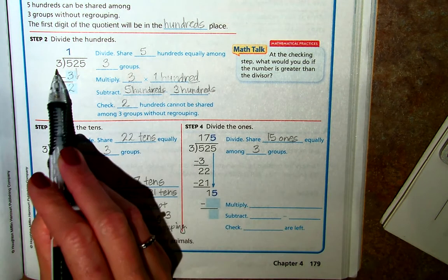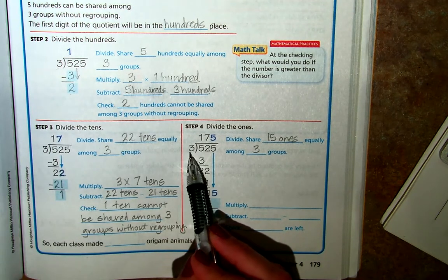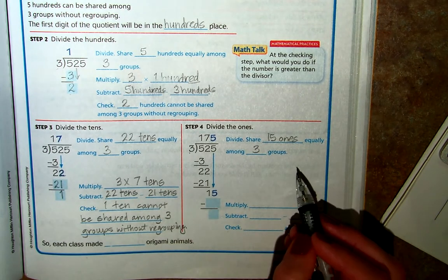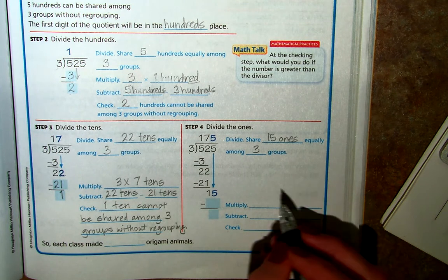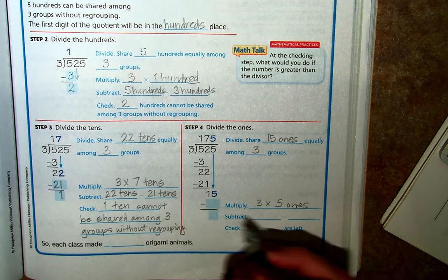Notice that each time we're dividing it equally, or sharing them equally, among 3 groups, because that is our divisor. So we multiply 3 times 5 ones.